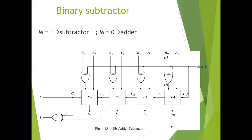It is worth noting that binary numbers in sign-complement system are added and subtracted by the same basic rules as unsigned numbers. Therefore a digital computer needs only one common hardware circuit to handle both types of arithmetic. The user or programmer must interpret the results of such addition or subtraction differently depending on whether it is assumed that the numbers are signed or unsigned. So we can use one circuit to implement both the operations of signed and unsigned numbers.